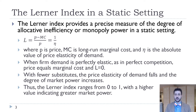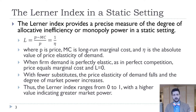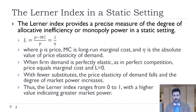When there are fewer substitutes, the price elasticity of demand falls and the degree of market power increases. So if you have a unique product that people can't get anywhere else, you're going to have a much higher Lerner Index and much more market power. It maxes out at one — because as marginal cost gets smaller and smaller compared to price, P over P just becomes one. So it varies between zero and one.